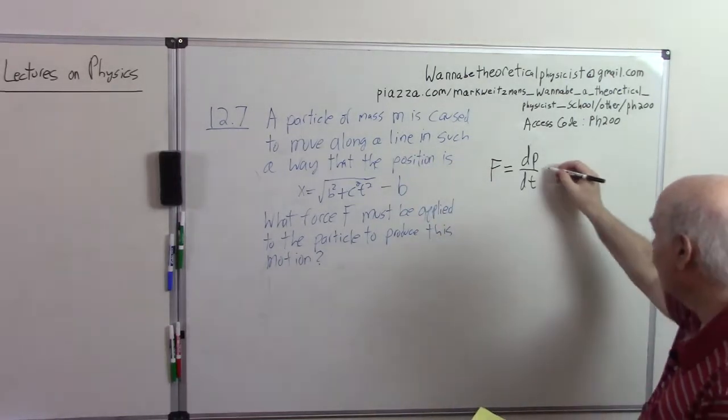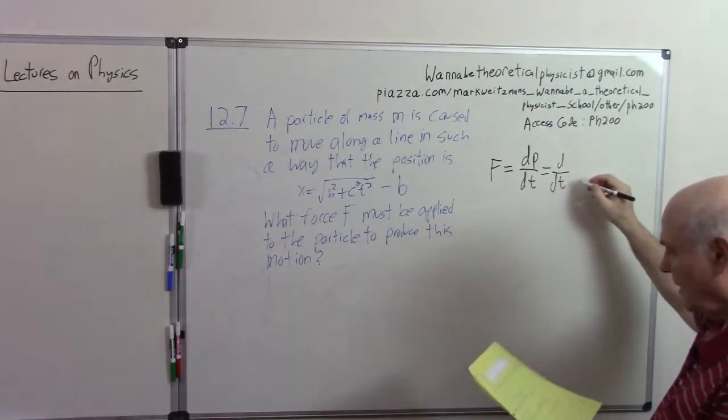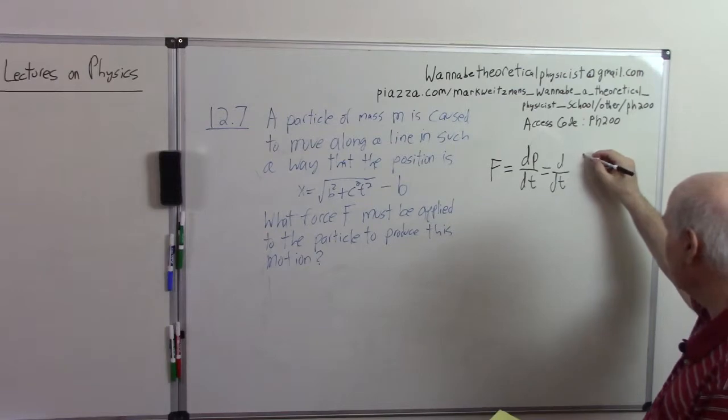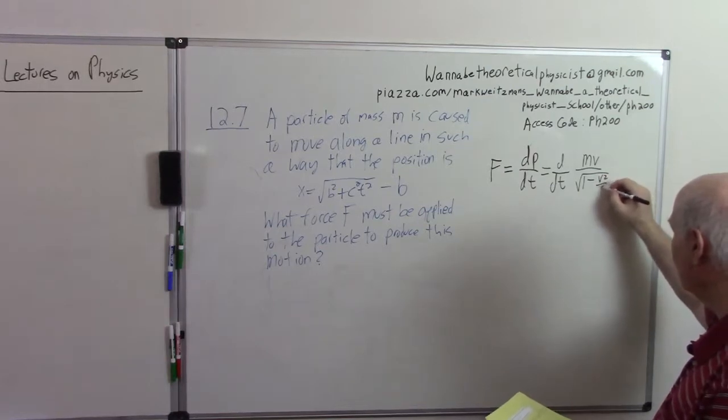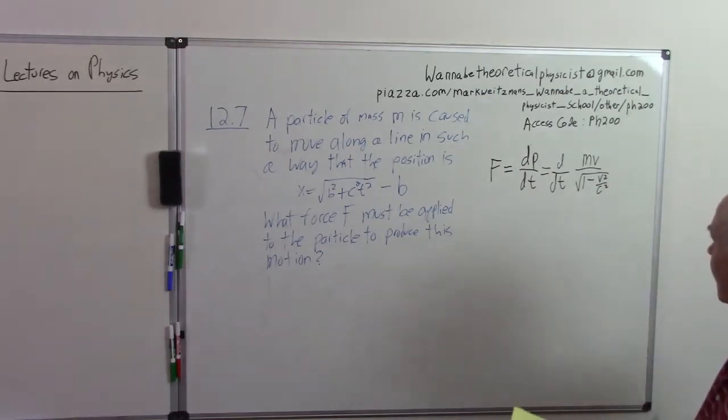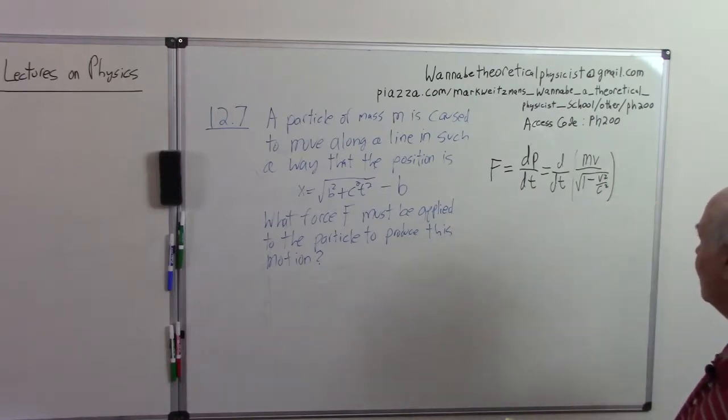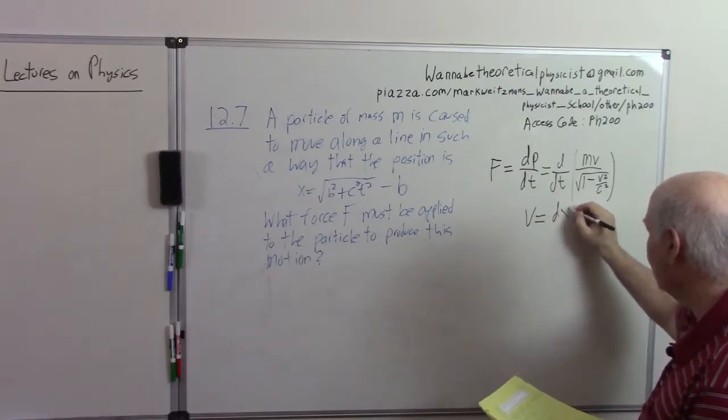And this is equal to d dt of the momentum in relativity, the relativistic momentum which is mv over the square root of 1 minus v squared over c squared. So all we have to do really is just, and of course v is equal to dx dt.